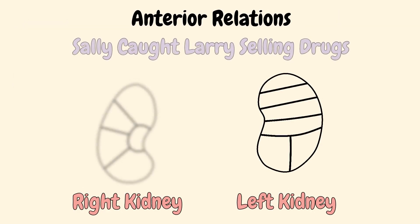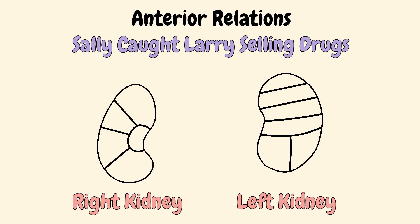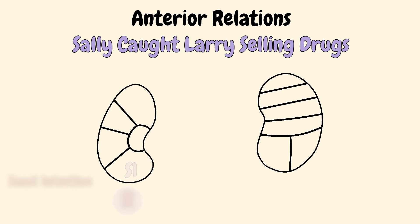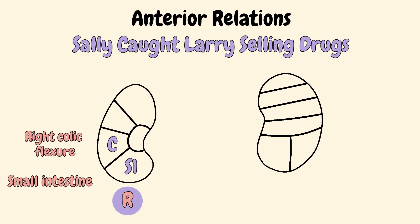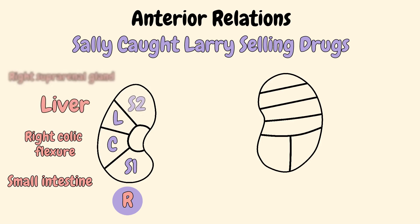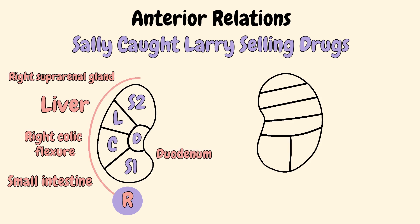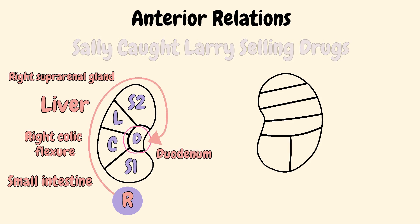Sally caught Larry selling drugs. S1 for the small intestine, C for the right colic flexure, L for the liver, S2 for the right suprarenal gland, and last is D for the duodenum. We read it like this and it ends at the D.